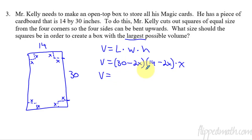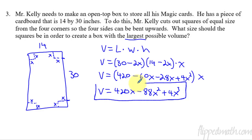If I foil this all out, multiply it, distribute 30 times 14 is 420. And I know that because I have a calculator next to me and I already did it. Minus 60x minus 28x plus 4x squared and then times the x. And then one more step, we can go ahead and combine like terms and distribute the x all at the same time. And that'll give us our answer of this thing here. That's a cubic function. This is what we're trying to optimize.